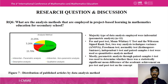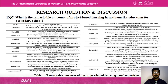The sixth research question is: what are the analysis methods employed in project-based learning in mathematics education for secondary school? 57.89% shows that the majority used inferential or parametric analysis — 11 out of 19 articles. Methods used include pre- and post-tests, Mann-Whitney U test, Wilcoxon Signed-Rank test, two-way ANOVA, Friedman test, normality test, independent t-test, and paired sample t-test. Parametric paired sample t-test was commonly used to determine statistically significant mean differences in academic achievement between pre-test and post-test.